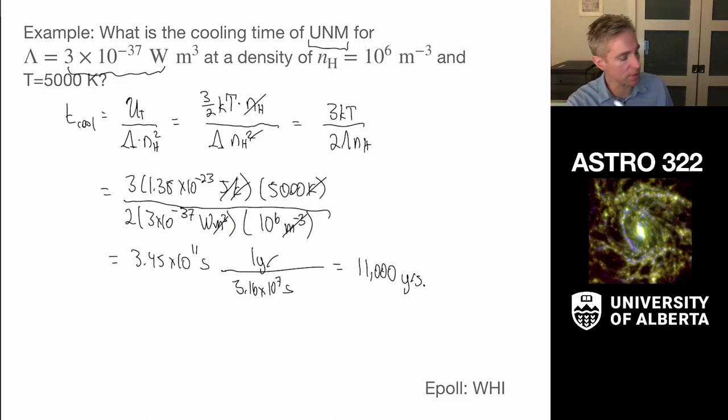So this is able to cool down really quite quickly and get down to these low temperatures compared to star formation timescales, orbital times of sun around the galaxy.